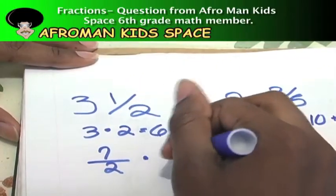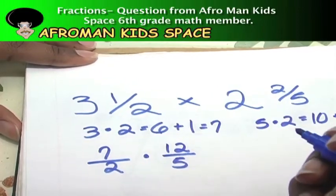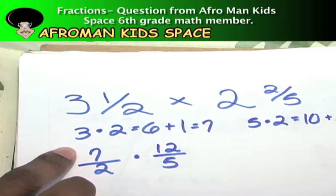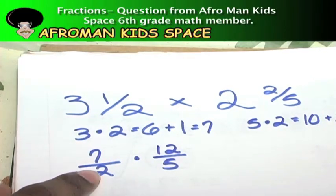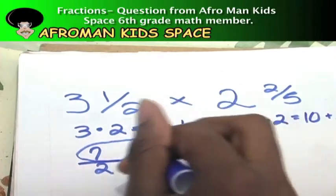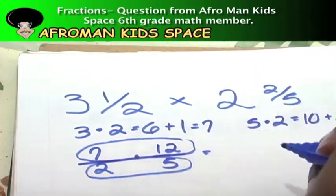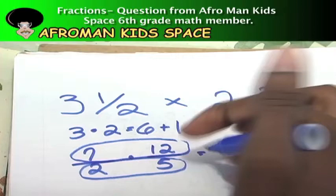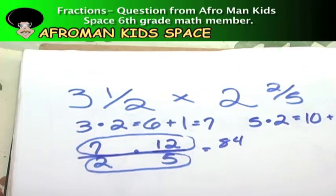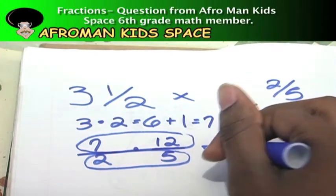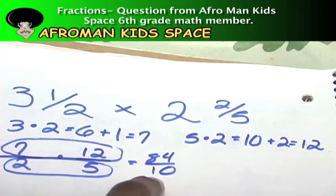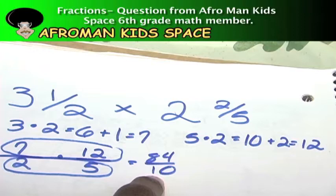Then take the 12 and put it over the original denominator again, and bring it back over here with the other one. That's 12 over five. So these are improper fractions, and what improper fraction means is that the numerator is larger than the denominator. From here, all we do is times these two top numbers, the numerators, and these two bottom numbers, the denominators. Seven times twelve, it's gonna be 84, and two times five, it's gonna be ten.